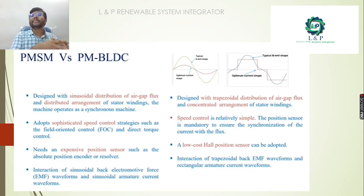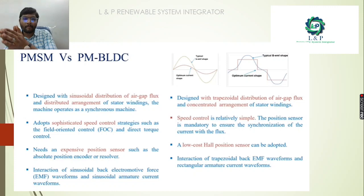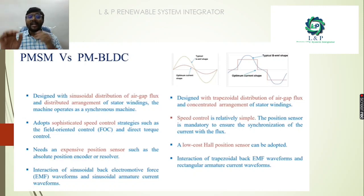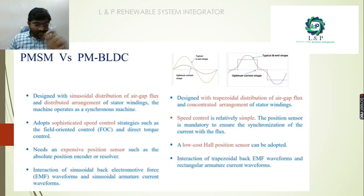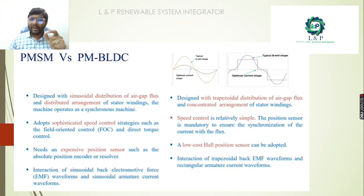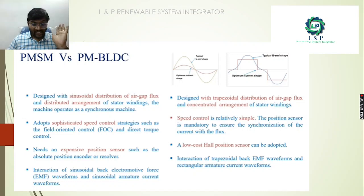In the permanent magnet synchronous motor we have sophisticated speed control, whereas in the permanent magnet brushless DC motor it is very simple. For the permanent magnet synchronous motor we use expensive position sensors and encoders, whereas for the permanent magnet brushless DC motor we use low-cost Hall position sensors.